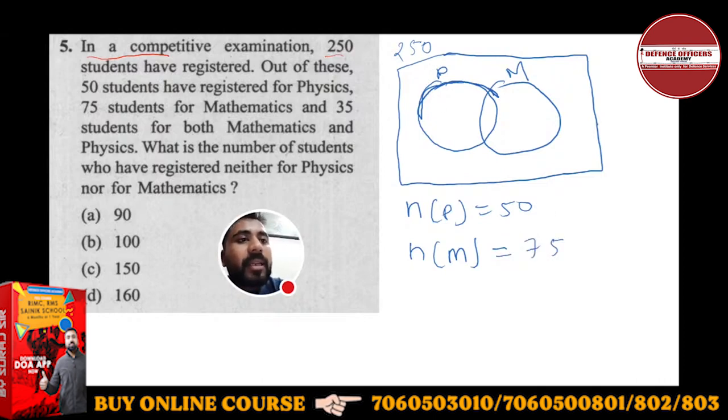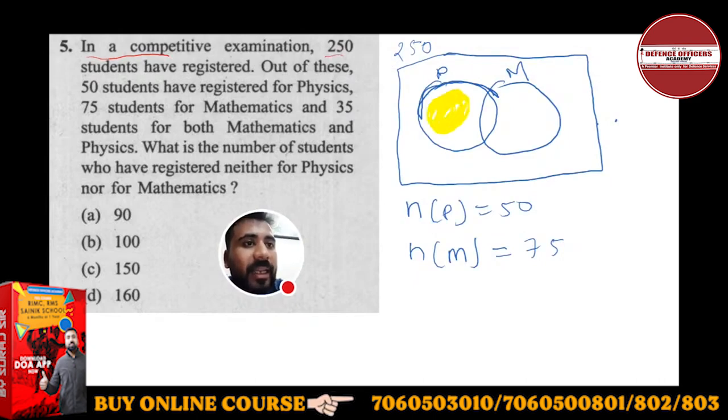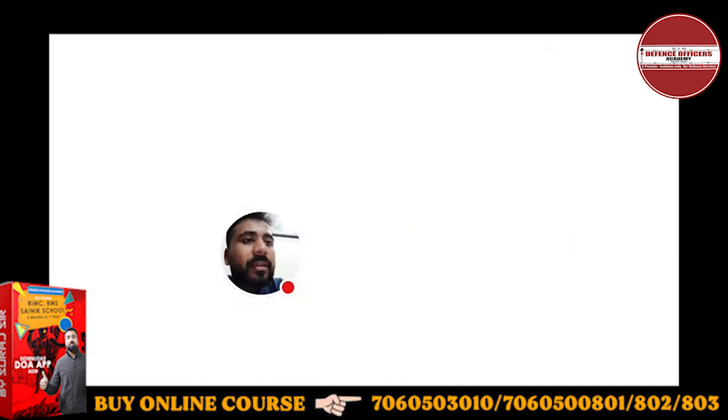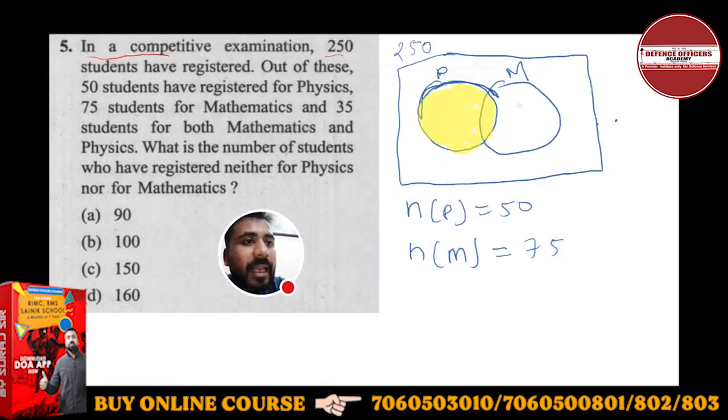This whole P - I will highlight it through this yellow. The thing which I am highlighting, this whole is P. And M I am highlighting, suppose in pink. This whole is pink. Can you visualize one thing that there is a common portion in which pink is also coming and yellow is also coming. This common portion is very important.